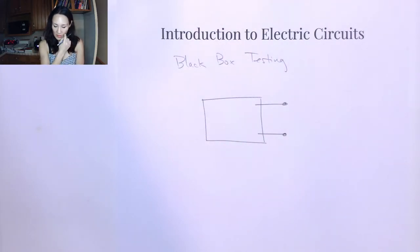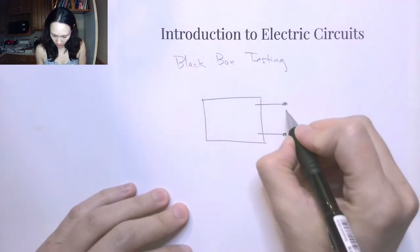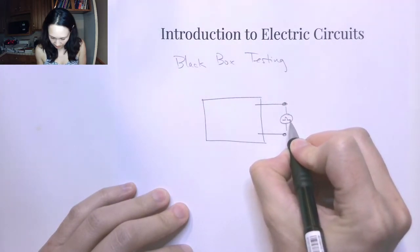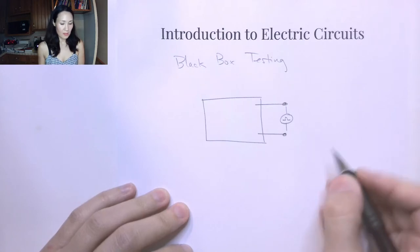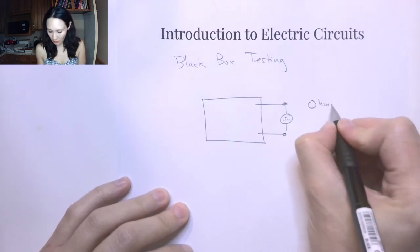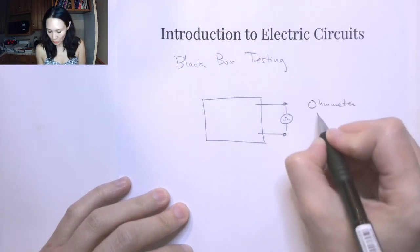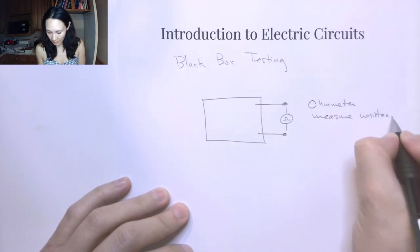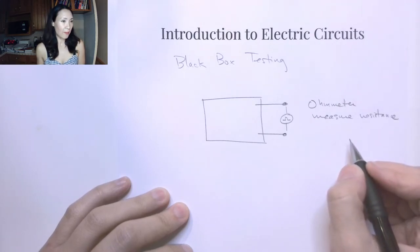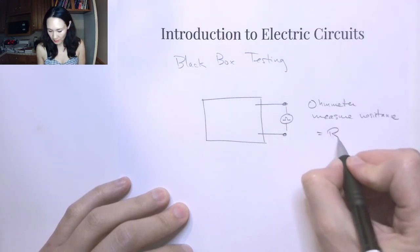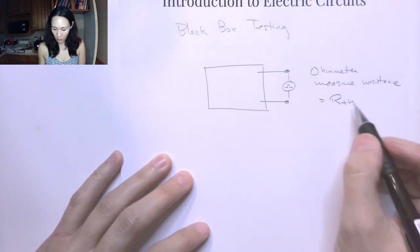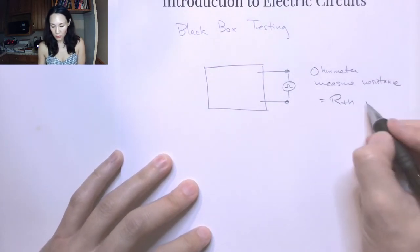Here's what we can do. If we attach an ohmmeter to the leads, just right across the leads, the ohmmeter is going to measure the resistance of the black box. The resistance of the black box is actually going to be our R_Thevenin. So we hook up an ohmmeter and we get our R_Thevenin.